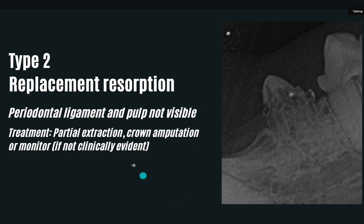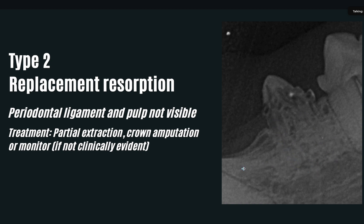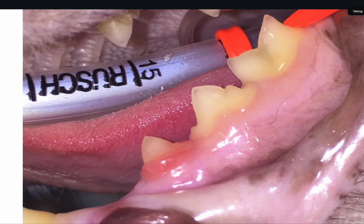This one is the easy one. This is Type 2 - the kind that you can do a crown amputation on. Type 2 is also called replacement resorption because the roots are getting replaced by bone. You cannot see the periodontal ligament space anymore and you cannot see the pulp canal. The treatment for these is crown amputation, or I would call it partial extraction - that means you actually dig a little deeper and take some of these inflamed areas out. You can do that with your football diamond burr. Clinically it may look like just some redness around that crown.